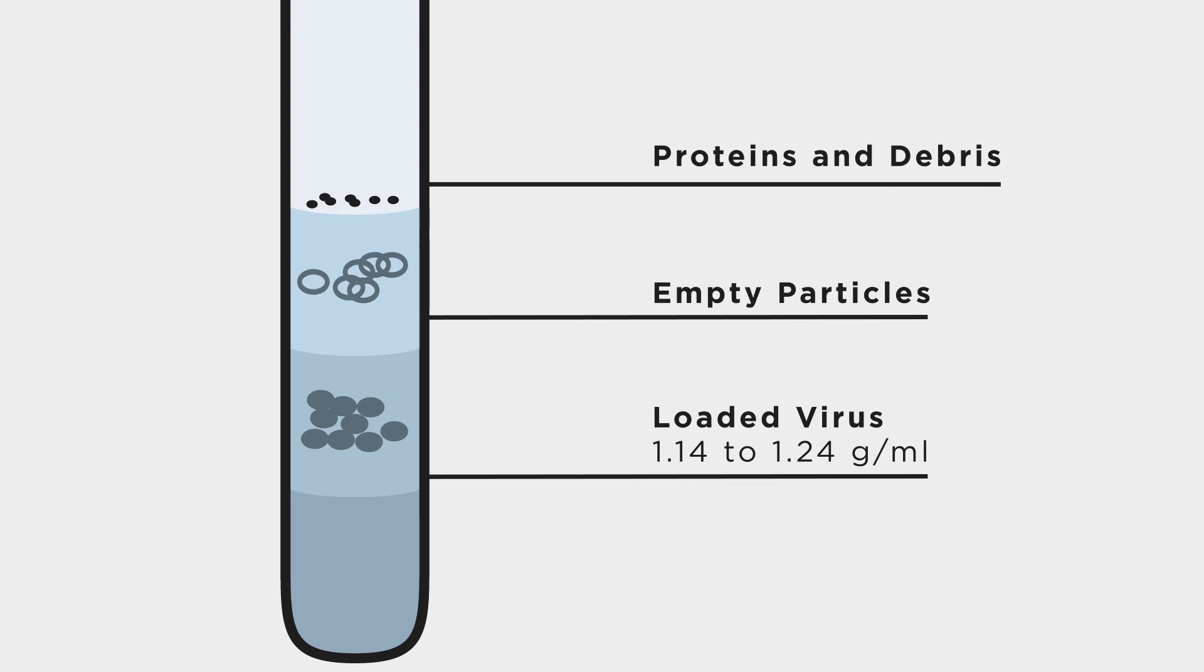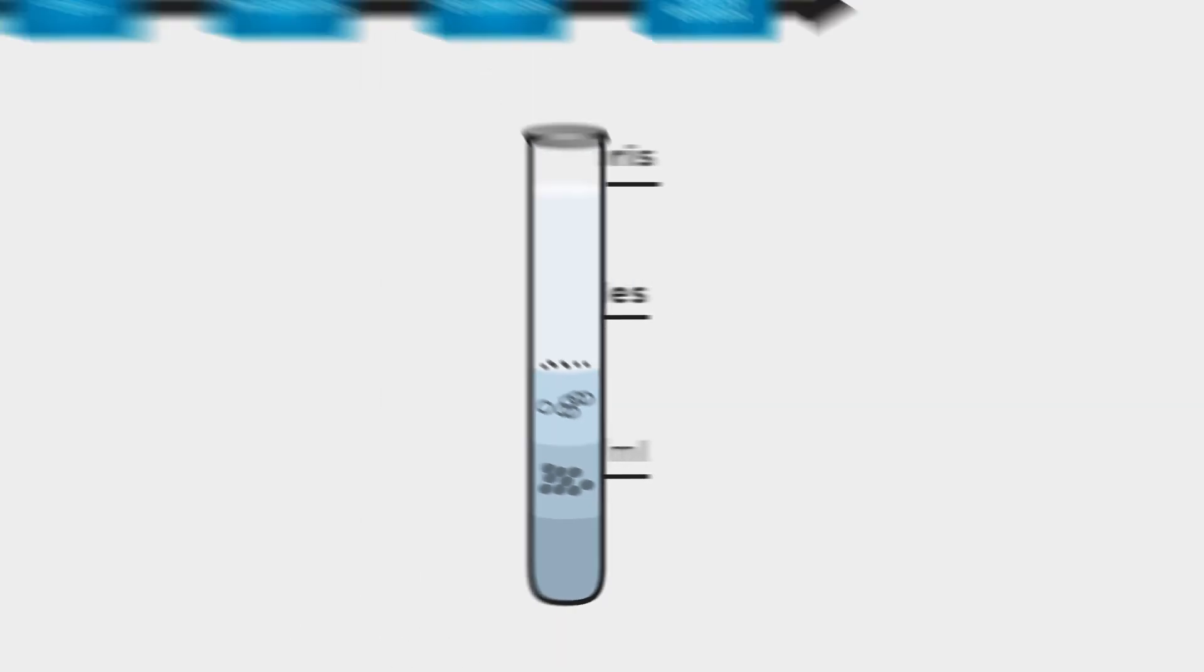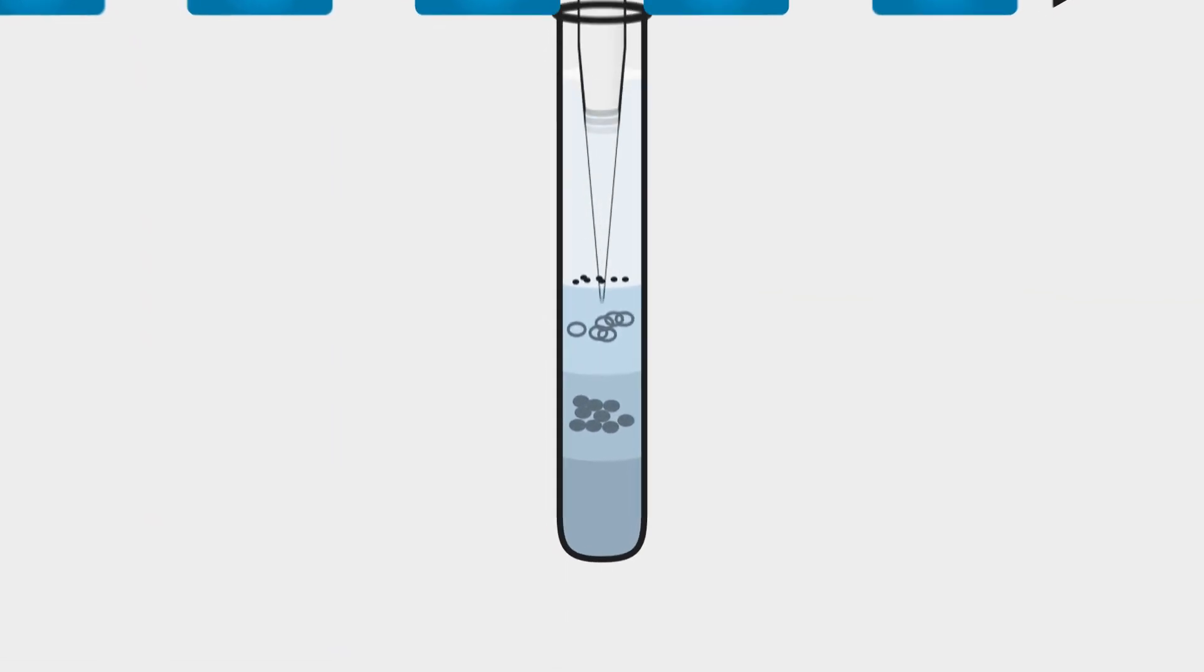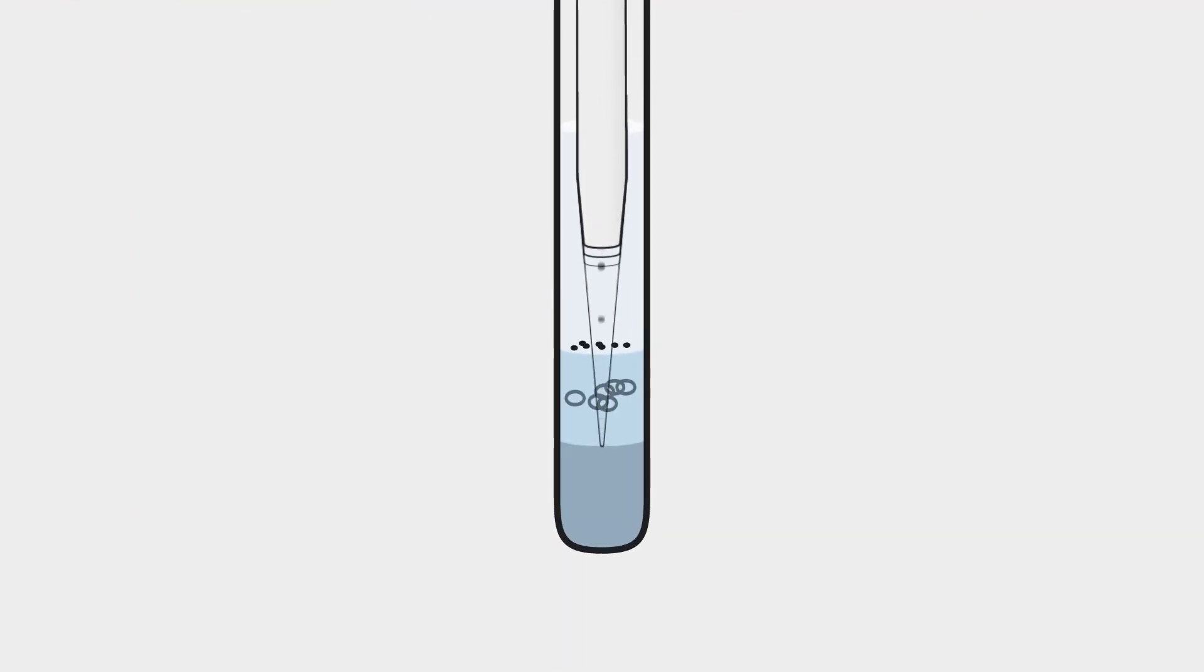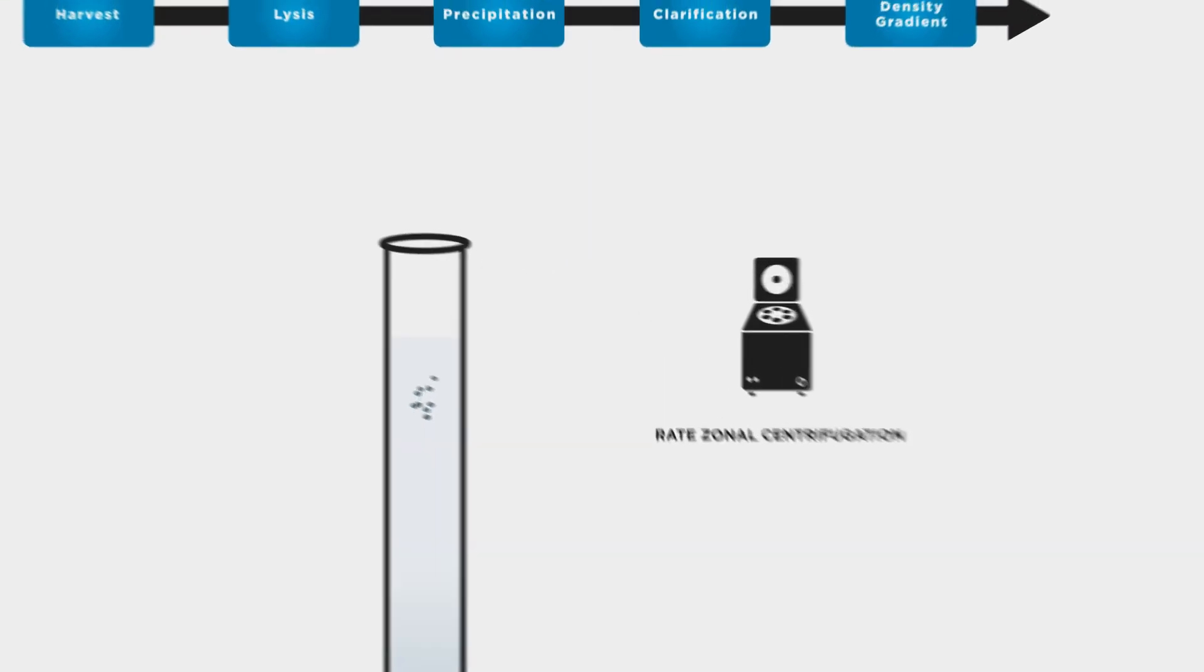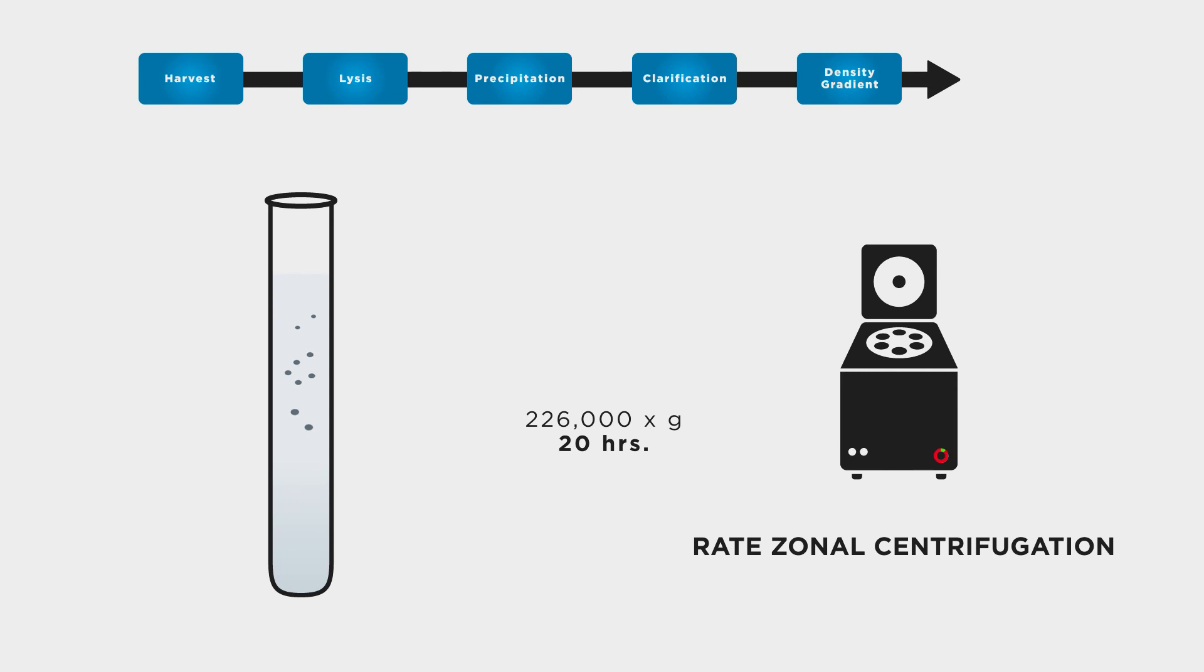Viral density can range from 1.14 to 1.24 grams per milliliter, which is denser than both empty particles and cellular proteins. The viral band is then carefully removed by either syringe extraction or fractionation. It is then subjected to rate zonal centrifugation to separate viral particles on the basis of size and mass.